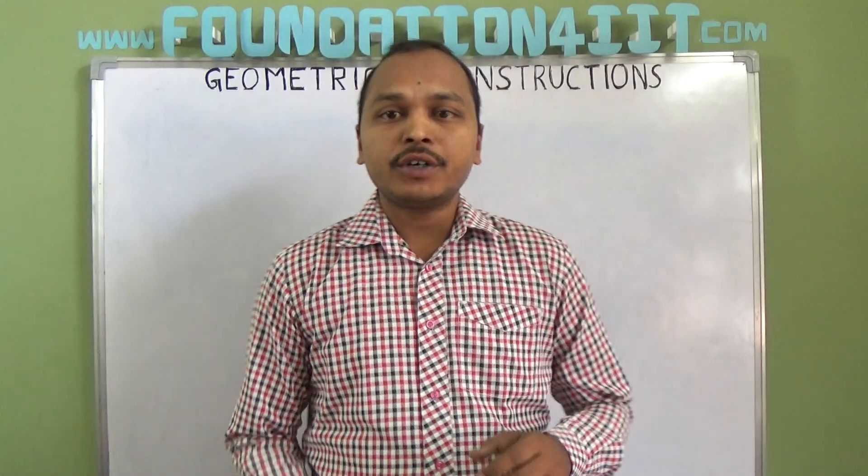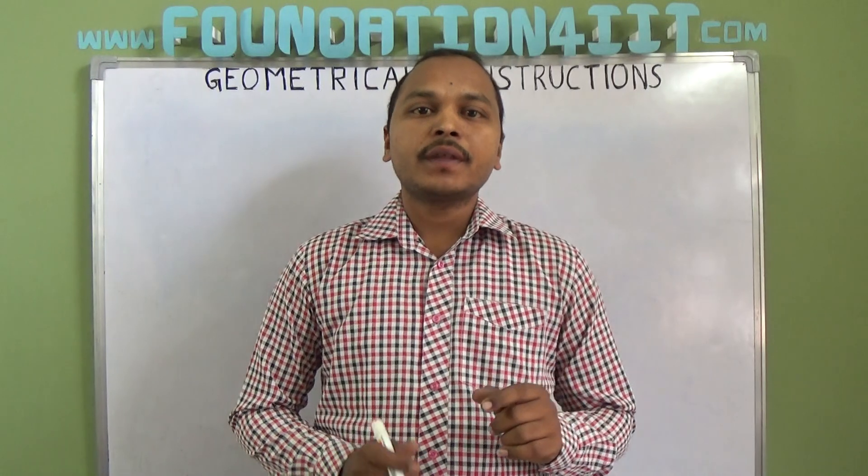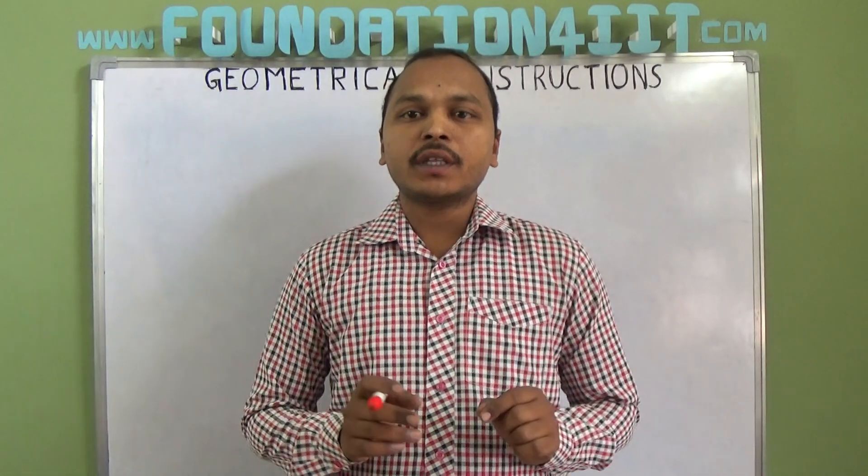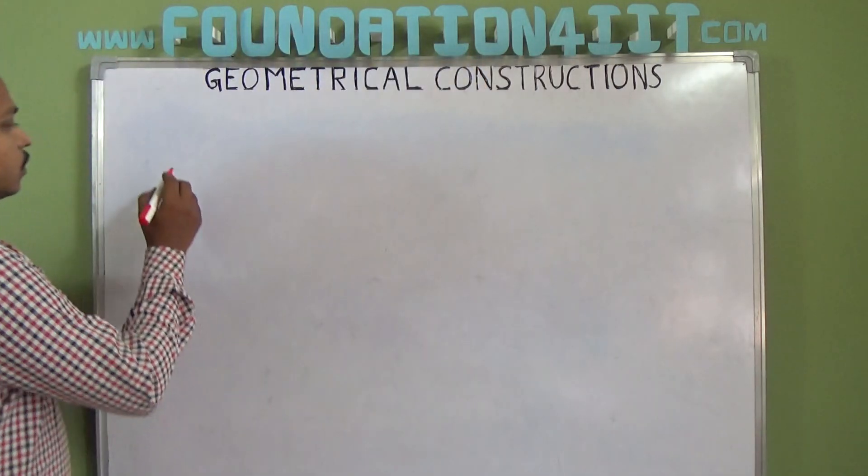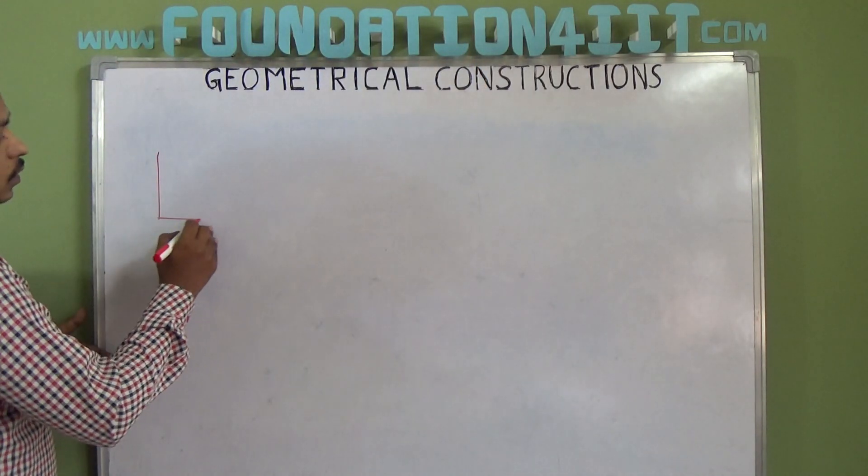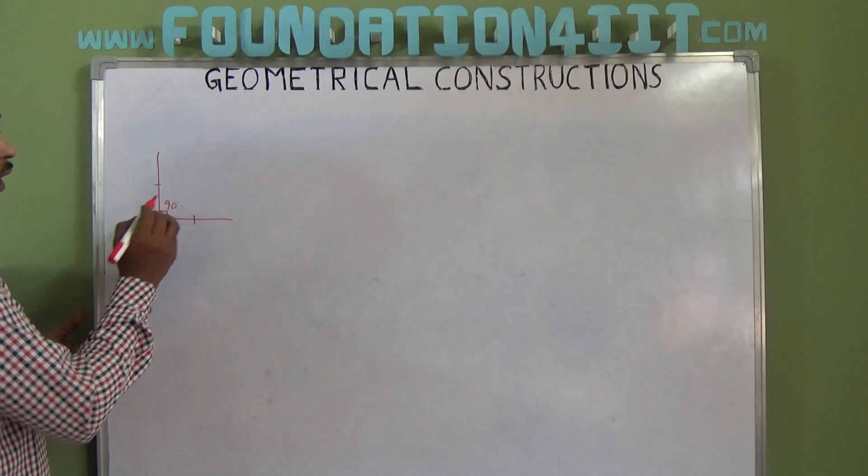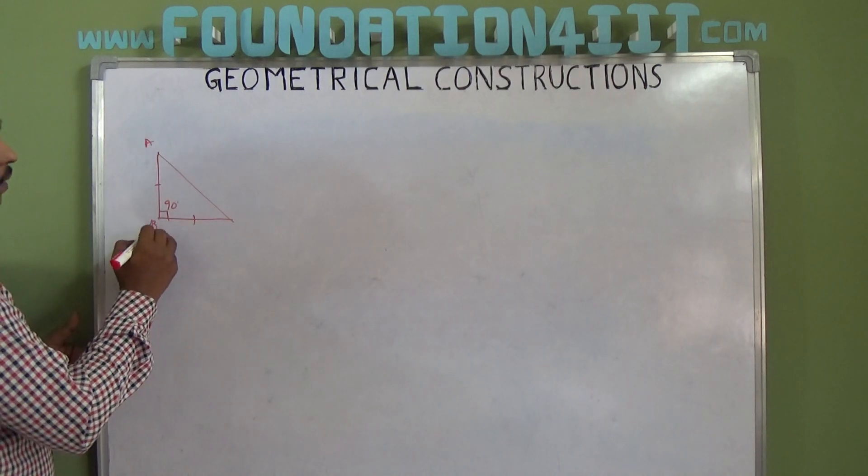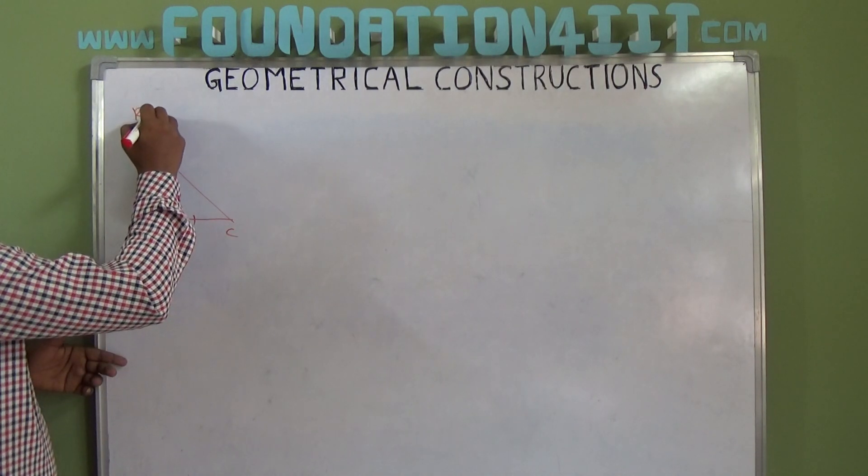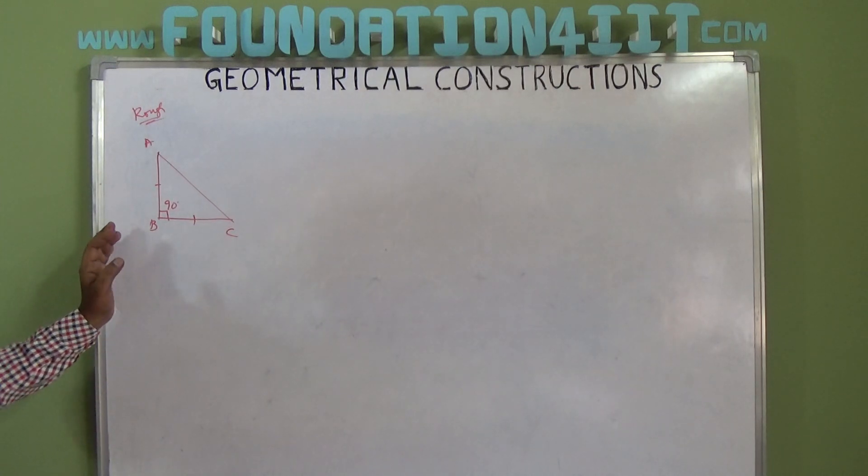So first of all you need to know what is isosceles right angle triangle. One angle should be 90 degrees and the sides forming the right angle must be equal, that is these two sides must be equal with 90 degrees between them. If you join ABC, now this is a right angle isosceles triangle.